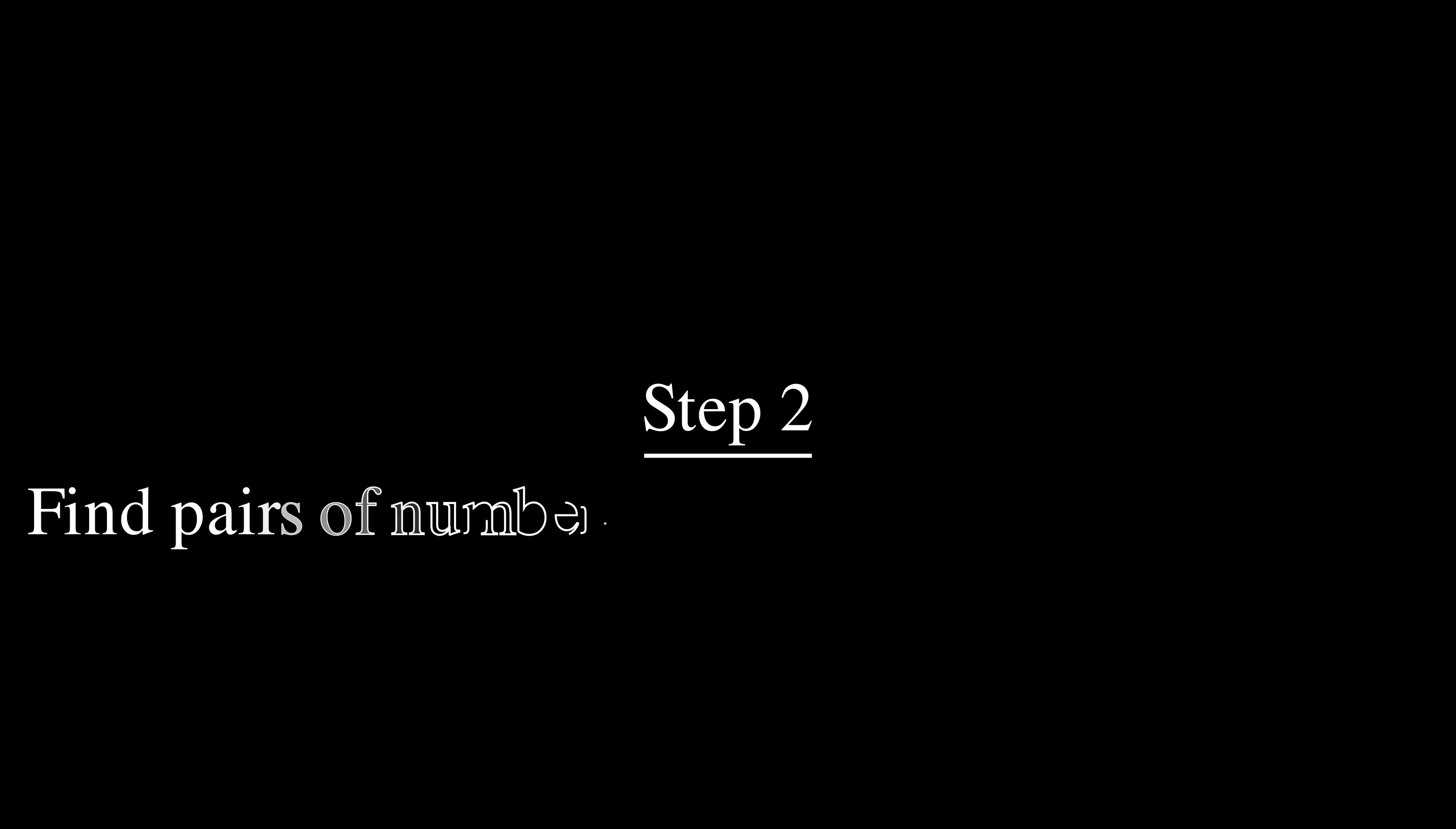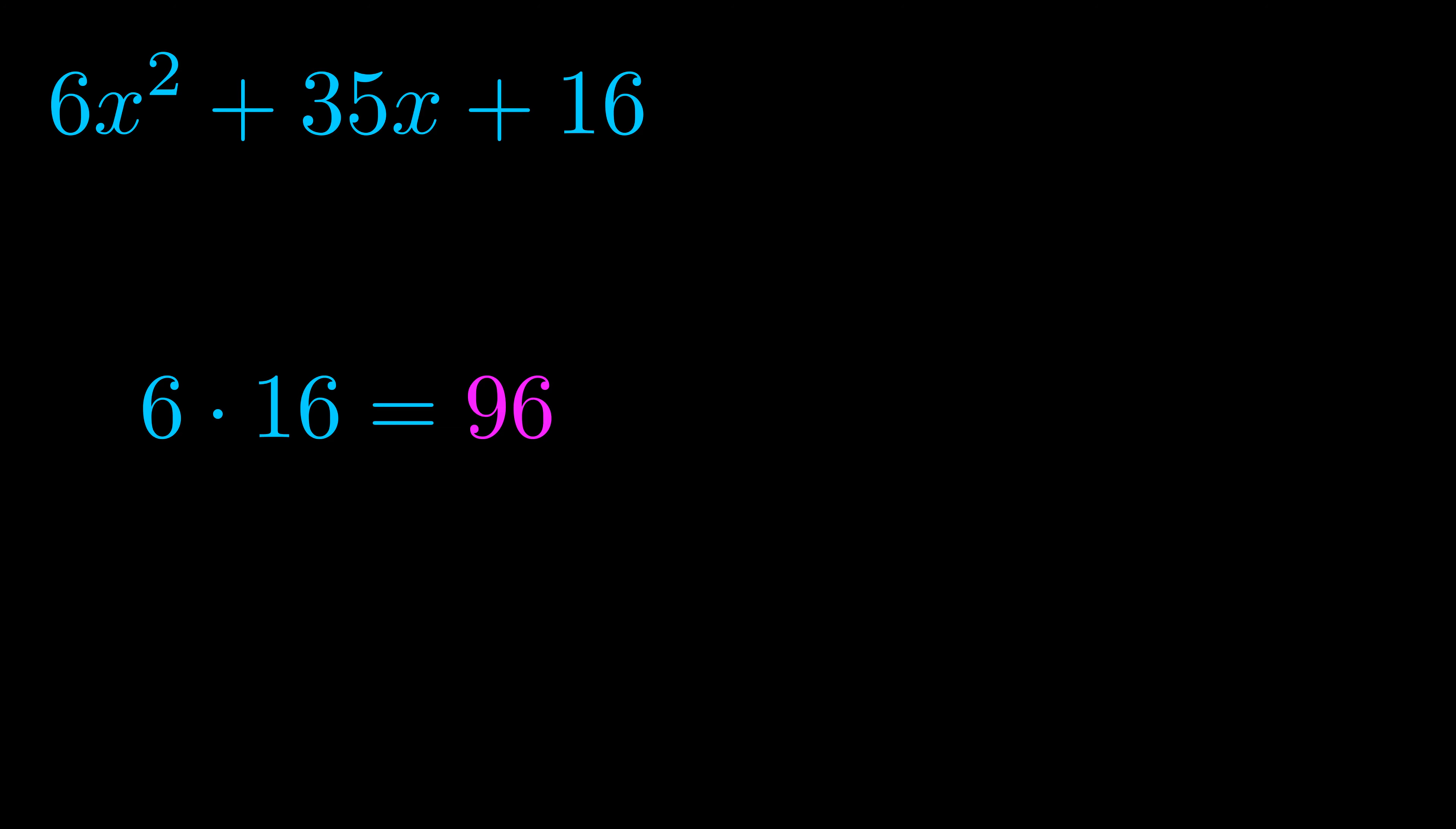Step two is to find all of the pairs which multiply to this number. Now you don't really need to find all of them, but go ahead and write down as many numbers as you can that multiply to the magenta value. Pause the video and resume when you're ready to continue.